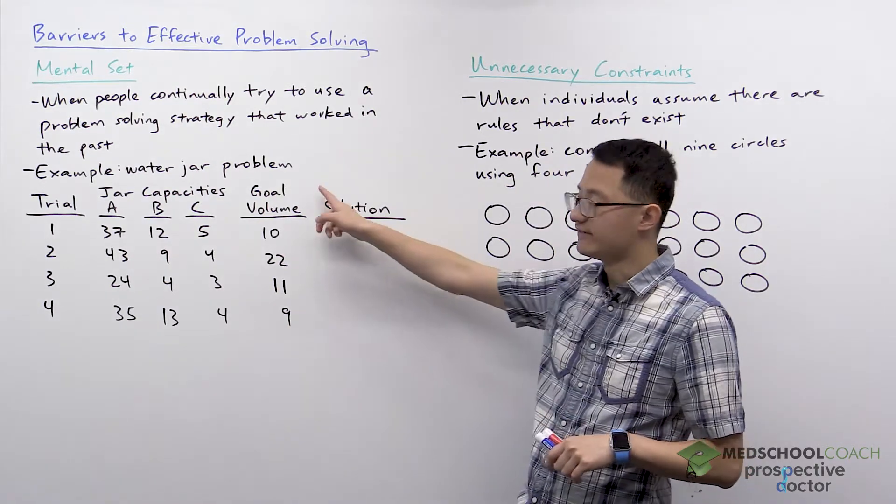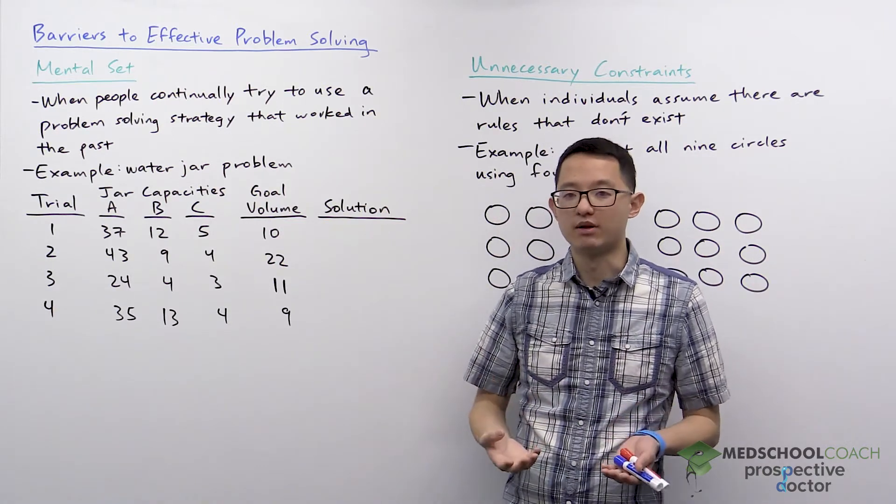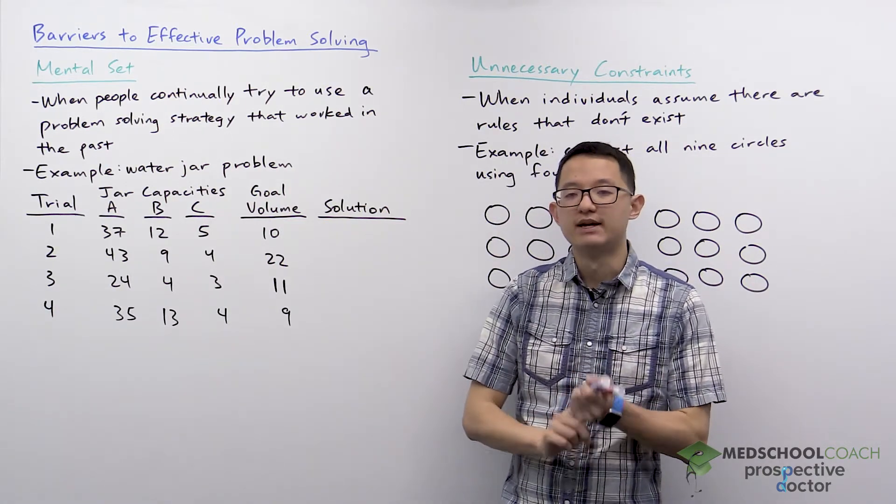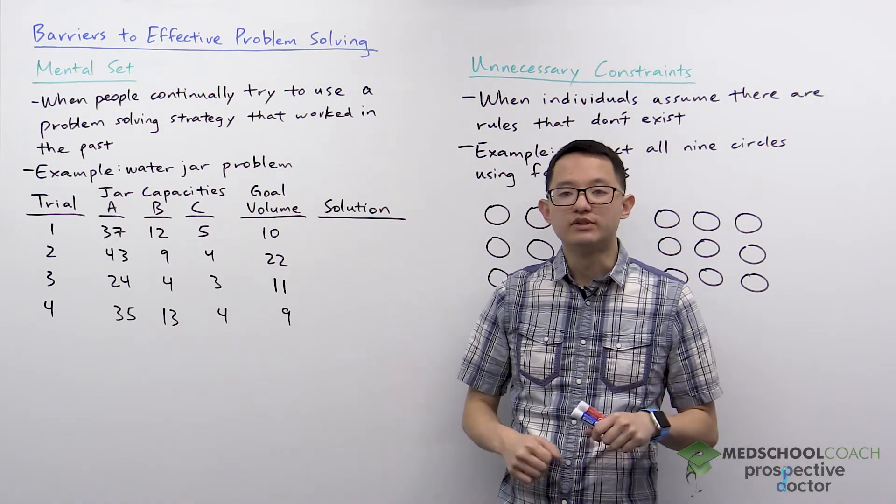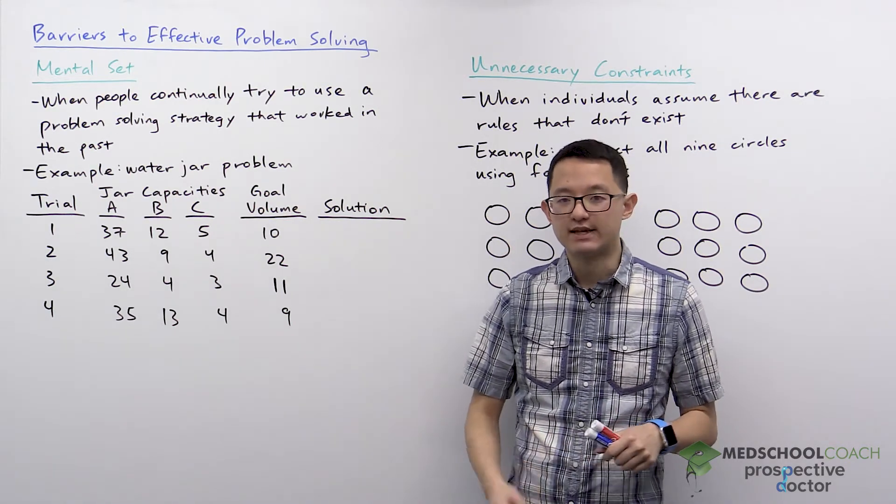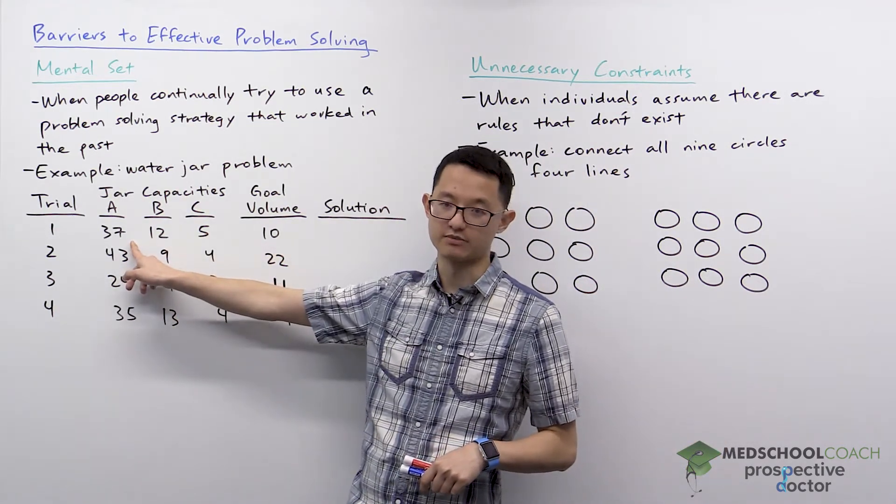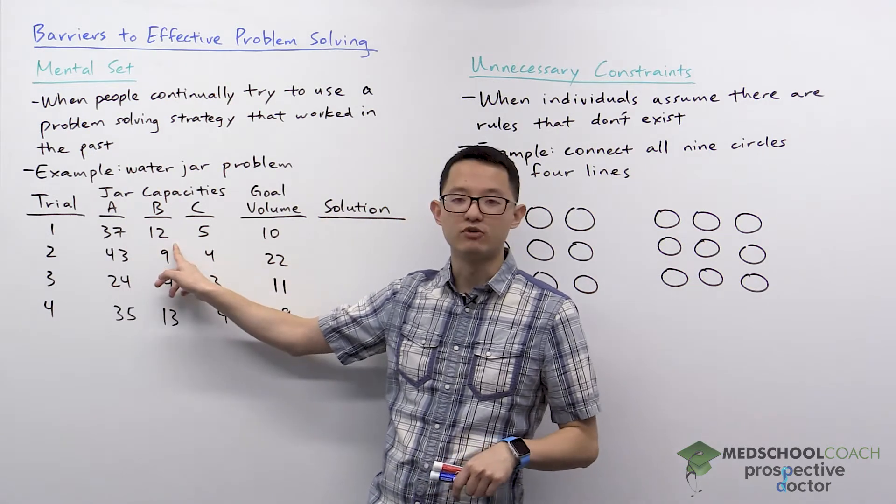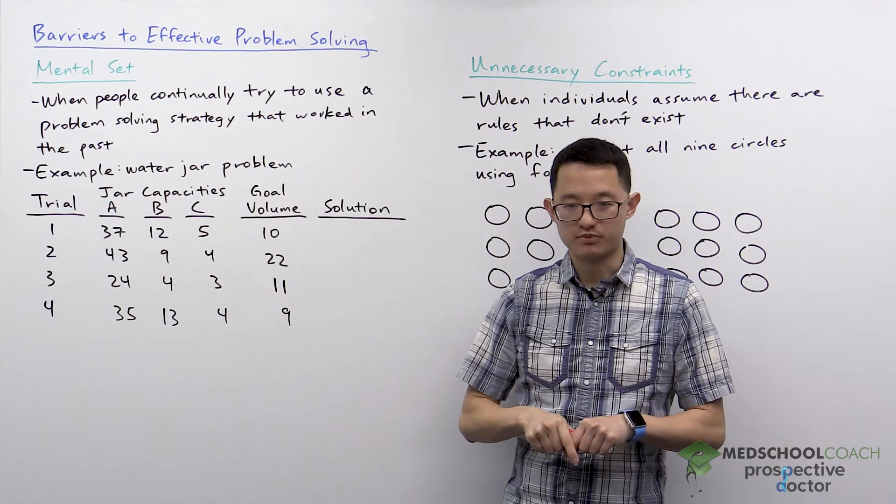We're going to revisit the water jar problem. Just to remind you, in the water jar problem a person is presented with three empty jars. The three jars can hold different volumes of fluids. For example, in this first trial you have jar A that can hold 37 cups of water, jar B that can hold 12 cups of water, and jar C that can hold 5 cups of water.